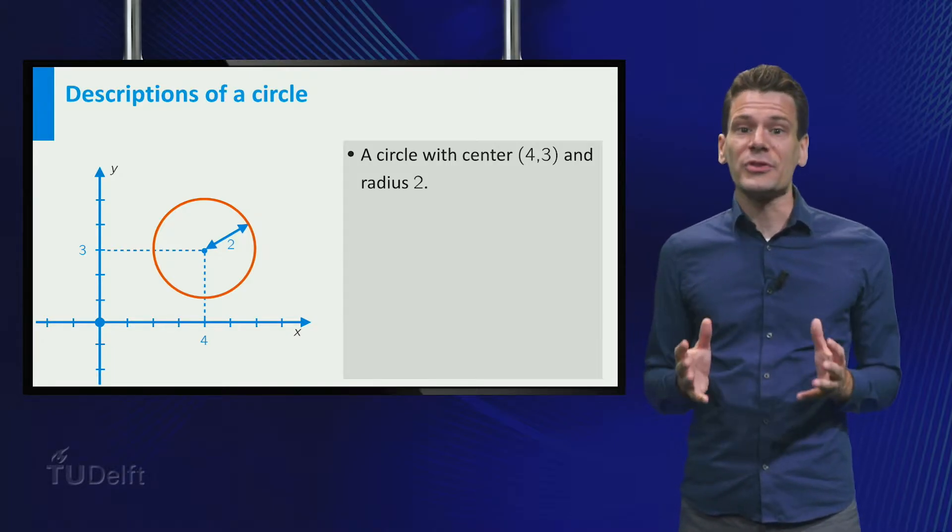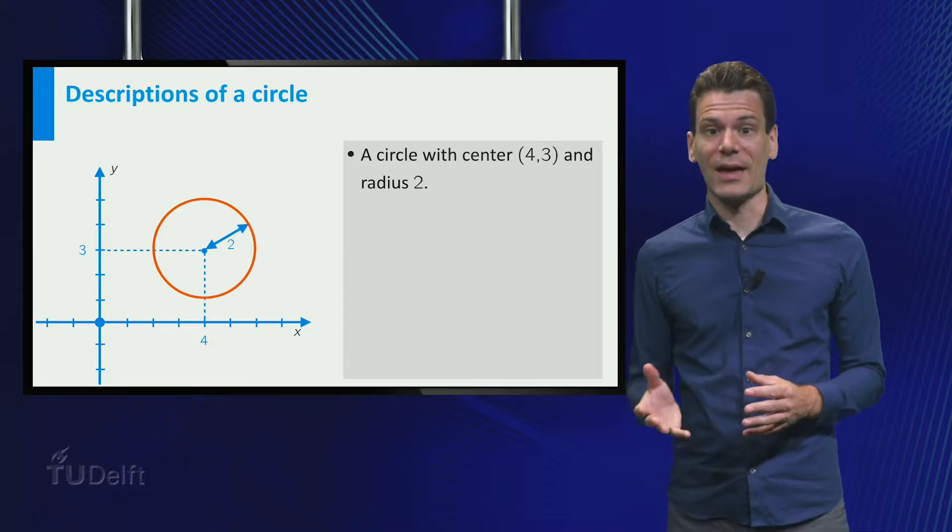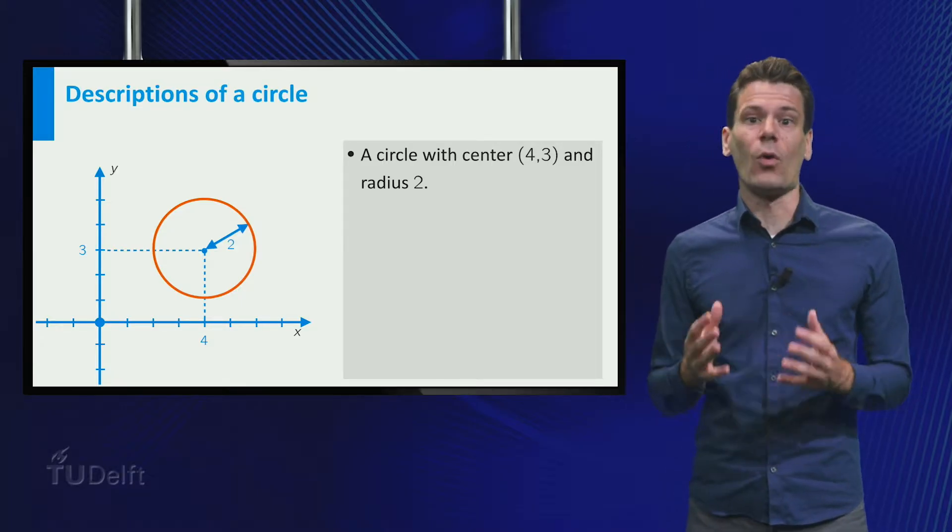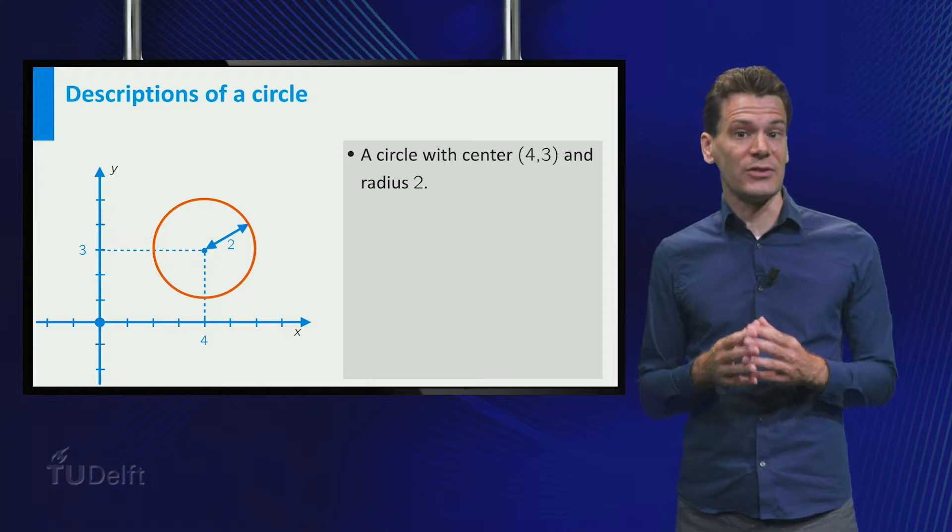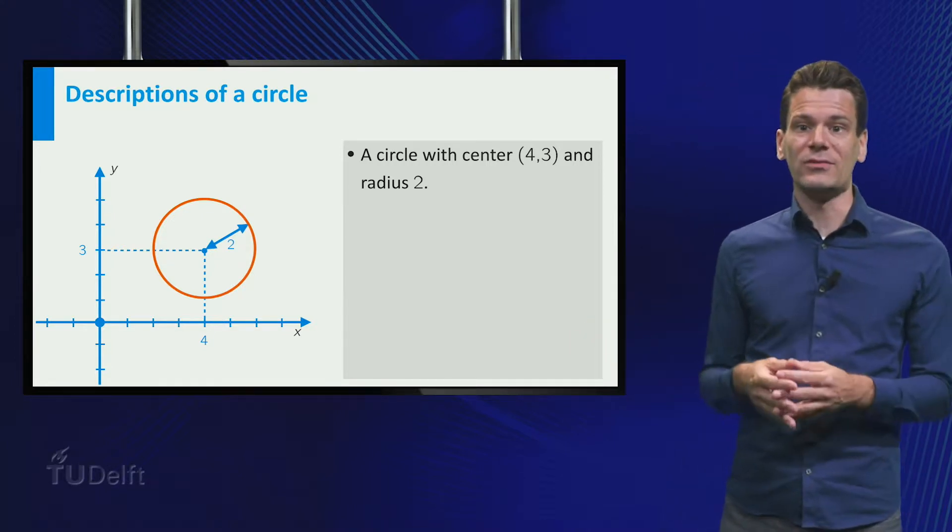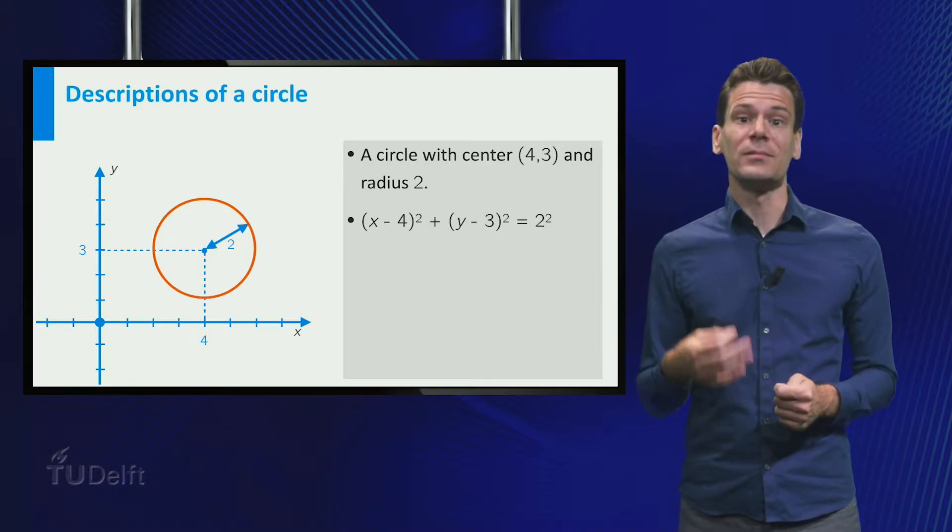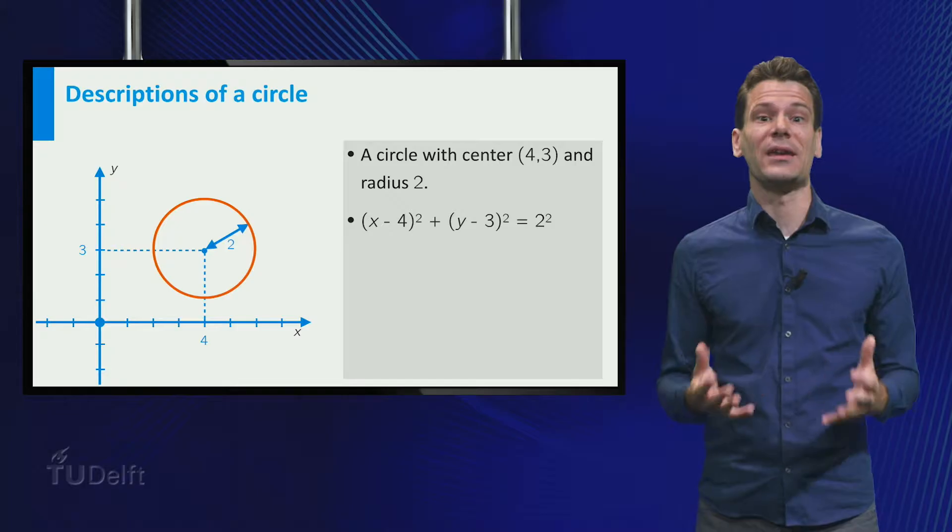As you have seen before, another possibility is to describe the circle using formulas. In this example, the circle consists of all points whose distance to the center is equal to 2. The Pythagorean theorem gives us the following equation for the x and y coordinates of such a point: (x - 4)² + (y - 3)² = 4.